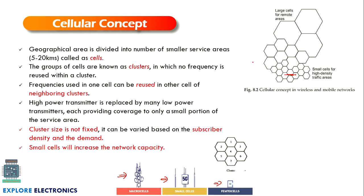We need to understand what a cell is. The geographic area is divided into smaller service areas; each hexagonal structure is called a cell. A group of cells — typically six to seven — is called a cluster. As seen in the diagram, seven cells form a cluster. Between two clusters, the same set of frequencies can be used — this is the frequency reuse concept. High-power transmitters are replaced by low-power transmitters since the coverage area reduces to a cell.